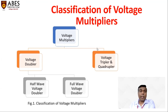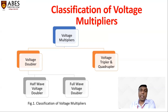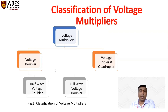The voltage multipliers are broadly classified into two categories: voltage doubler, and voltage tripler and quadrupler. If the voltage multiplier gives twice the peak value of amplitude of input voltage, it is known as a voltage doubler. If it gives 3 times, it is known as a voltage tripler. The voltage doubler is again classified into two categories: half wave voltage doubler and full wave voltage doubler. In my last video we discussed the half wave voltage doubler, so in this video we are going to discuss the full wave voltage doubler.